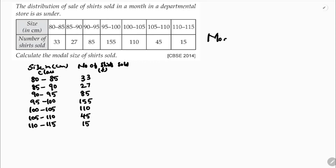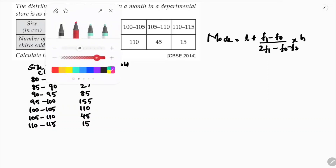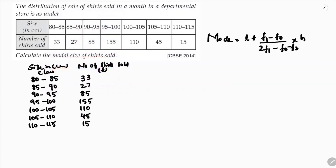We need to find the modal size. The mode formula is: L + [(f1 − f0) / (2f1 − f0 − f2)] × h. First, we select the modal class by identifying the highest frequency, which is 155. So 95–100 is the modal class.